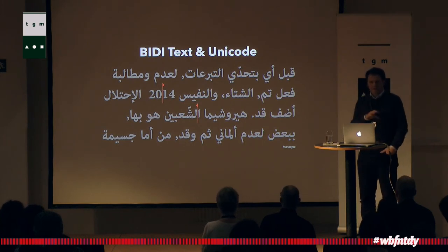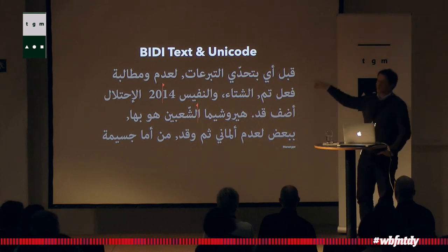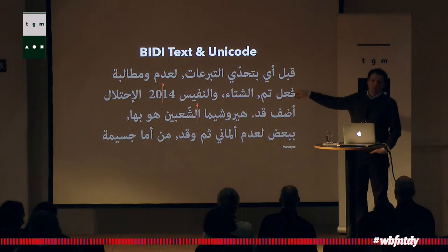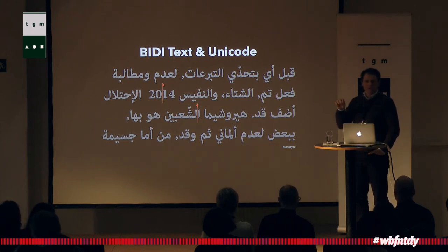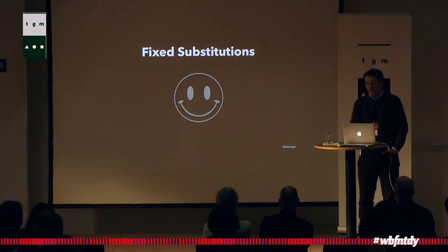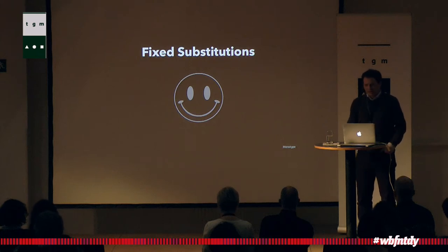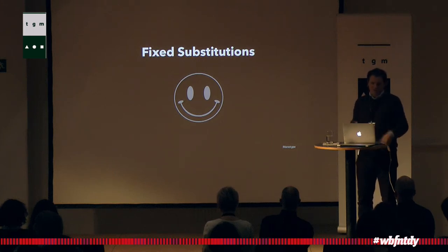Whittle can do bidi — bidirectional — text and supports Unicode in its latest version. What I mean by bidi is: when you type Arabic, you go right to left, and when you type a number, you write it left to right. The software takes care of that and makes sure your cursor is pointing the right direction so you always know where you're typing. It also has some fixed substitutions — like colon plus brace giving you a smiley — with a dictionary the client can edit to put icons in their font.